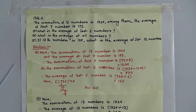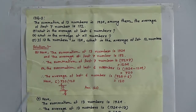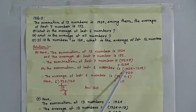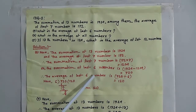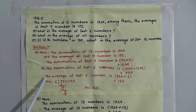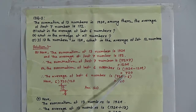The summation of the last six numbers is found by subtracting the summation of the first seven numbers from the summation of 13 numbers. So we subtract 1204 from 1924 and we get 720. The average of the last six numbers is 720 divided by 6, which equals 120.